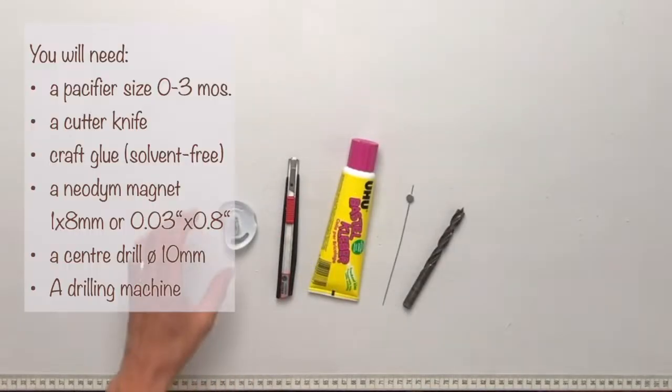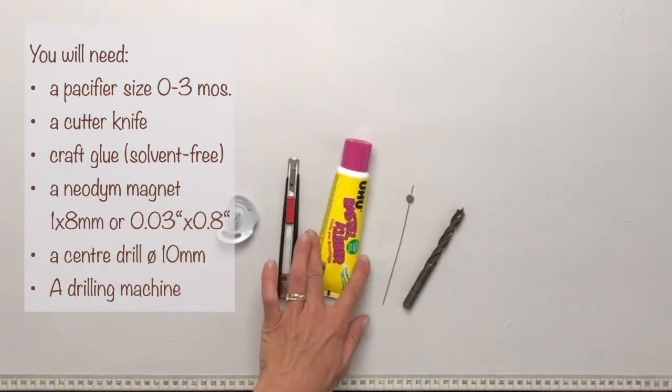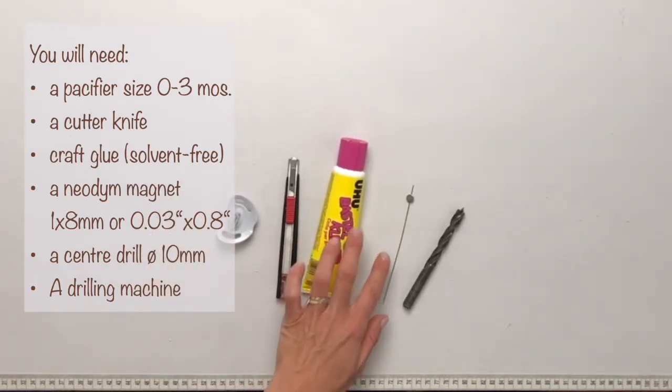For this you need your pacifier. This is a normal pacifier from the drugstore, best for infants from 0 to 3 months old or for newborns. And then you need your cutter, the solvent-free craft glue, and the magnet of course.